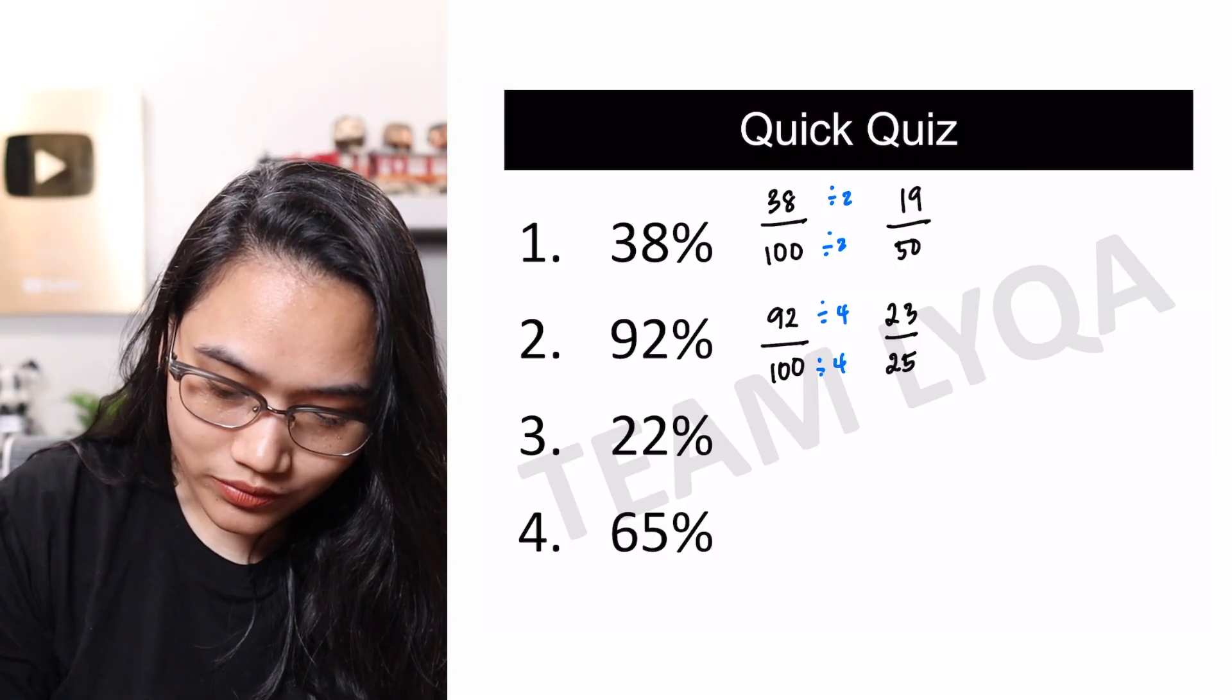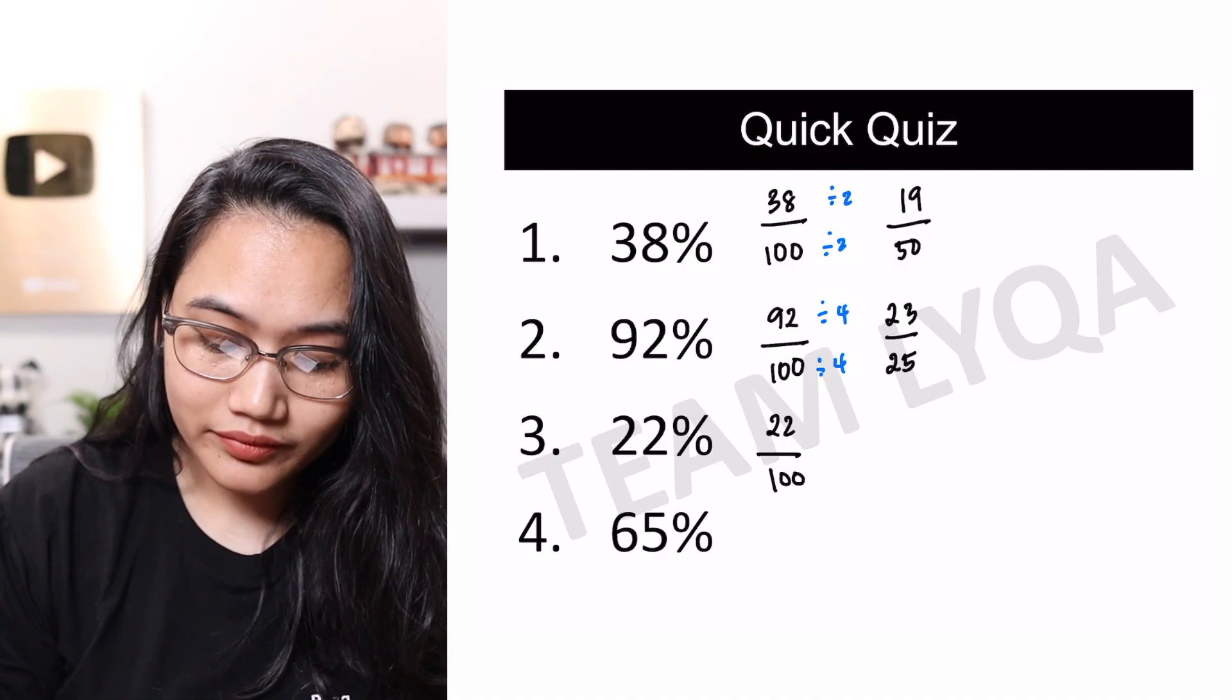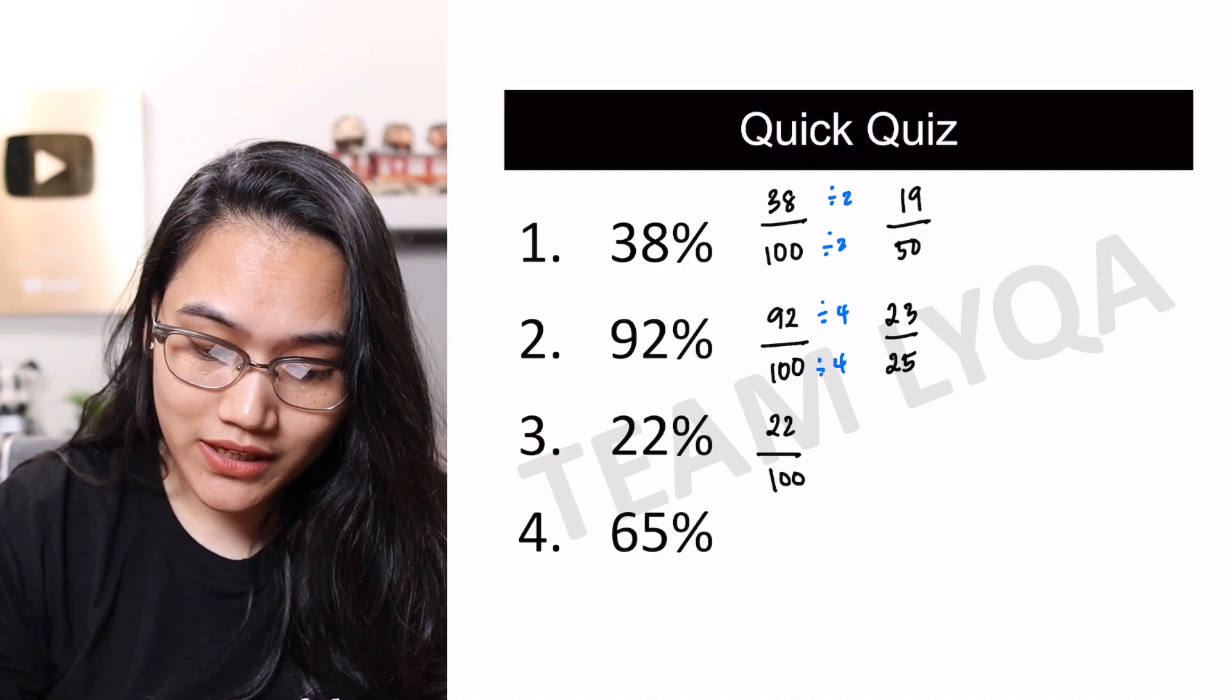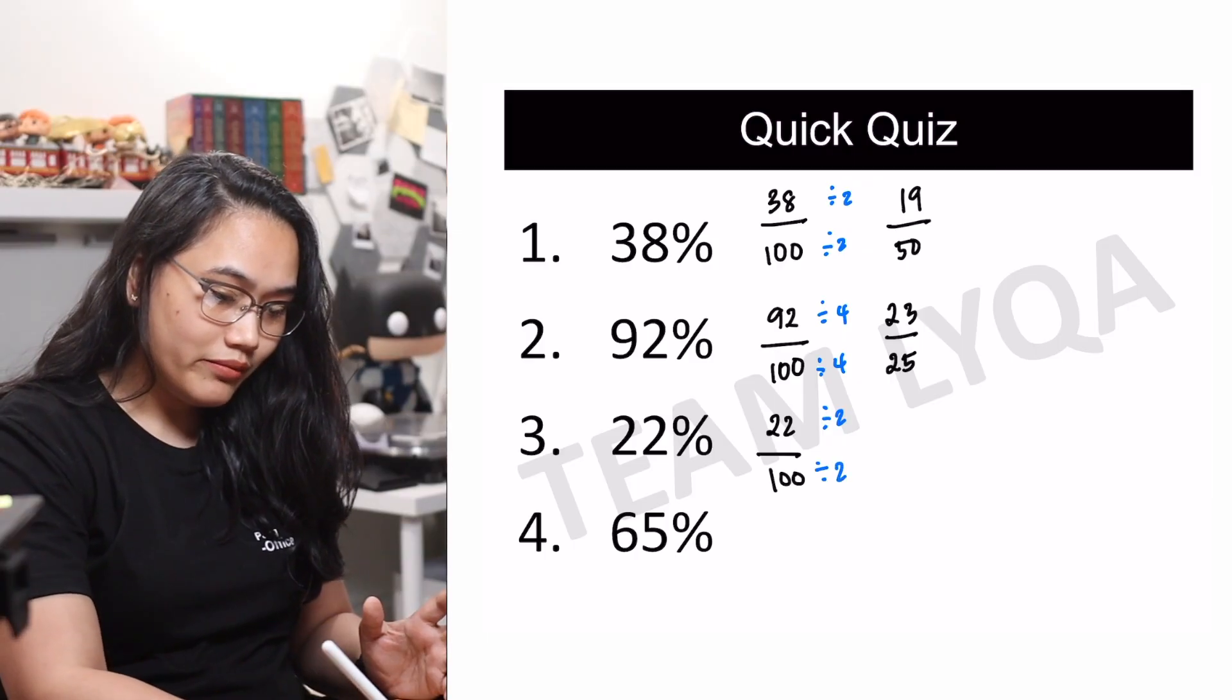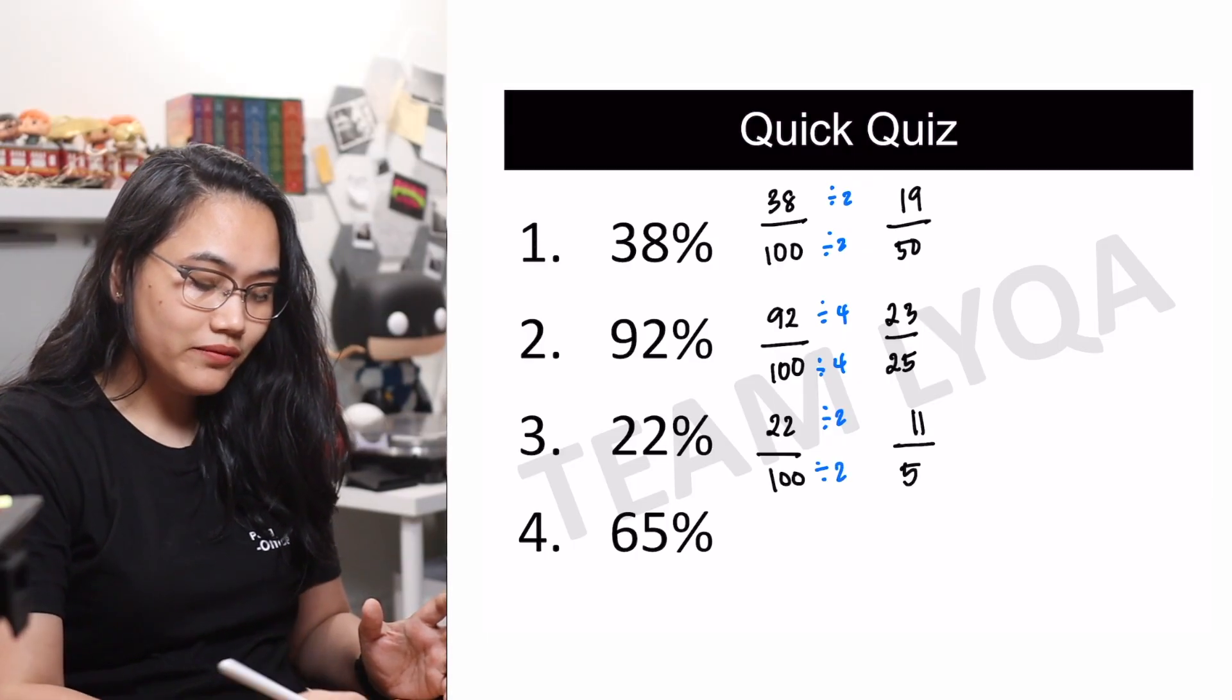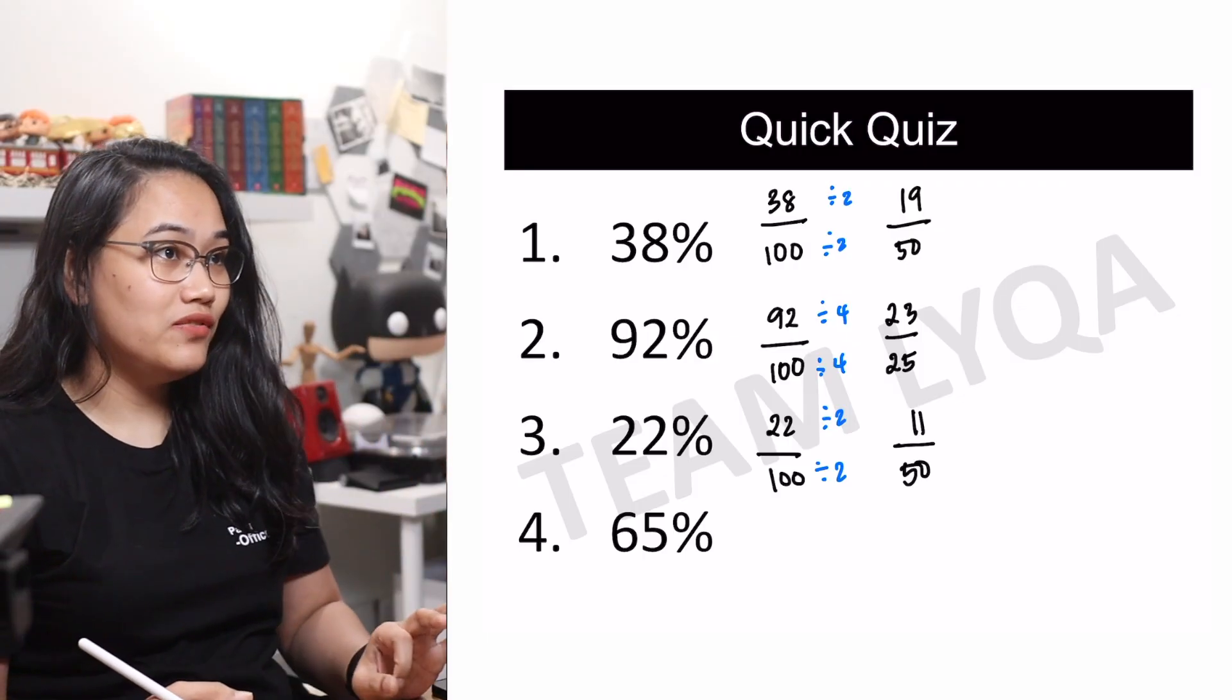Next, we have 22. So 22 over 100. They're both even, which means I can divide both of them by 2. And we get 11 over 50. We can't do anything more there. It's already in lowest terms. So we'll leave it at that.